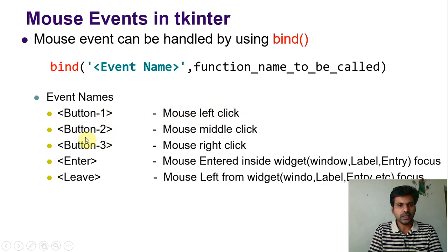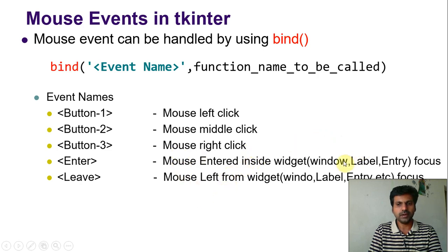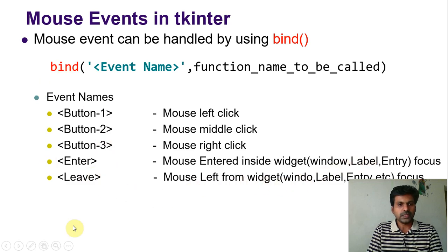The predefined events are: Button-1 for left click, Button-2 for middle click, Button-3 for right click, and Enter and Leave for when the mouse pointer enters or leaves the widget. The widget here could be a label, window, or any widget. These are the events we can apply in the bind function.